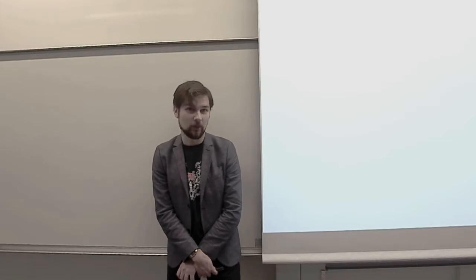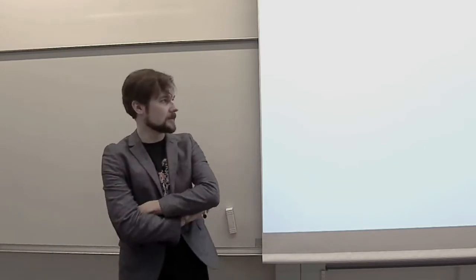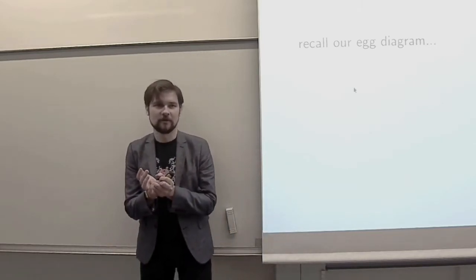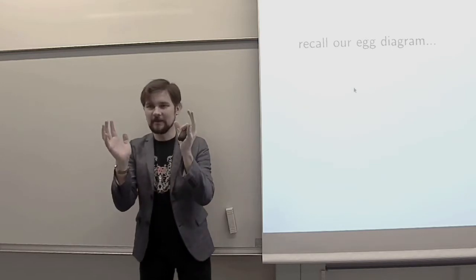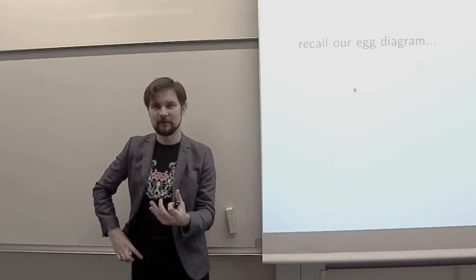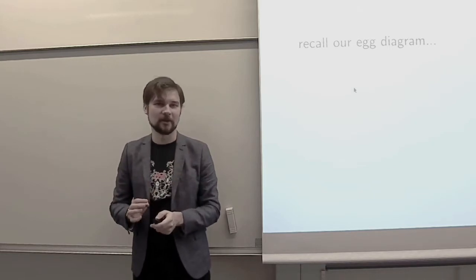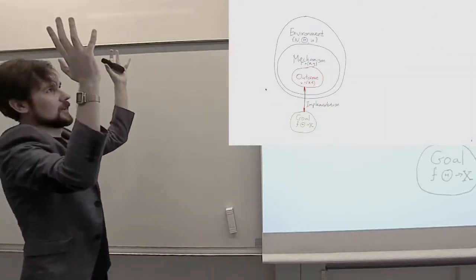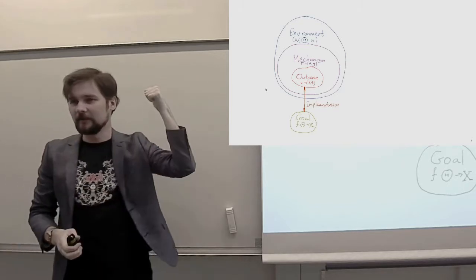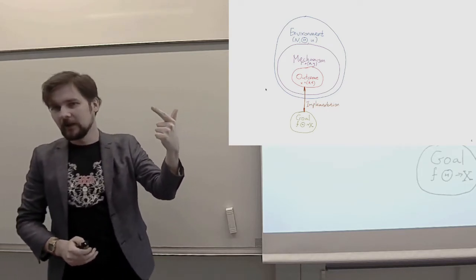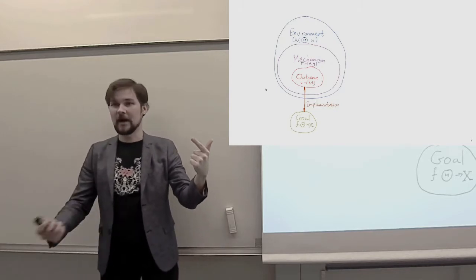Let's talk about what exactly information design is and what we will be doing in these next two weeks. Let's start by recalling the first diagram we drew in our course: the setting of environment, mechanism, outcome, and so on. When we compared mechanism design and connected it to game theory, we will now use the same diagram to connect mechanism design to information design. The outer layer is the big environment, telling us what players we are dealing with, what their types are, and what they know about their own and others' preferences.